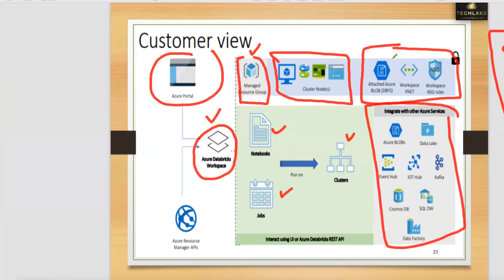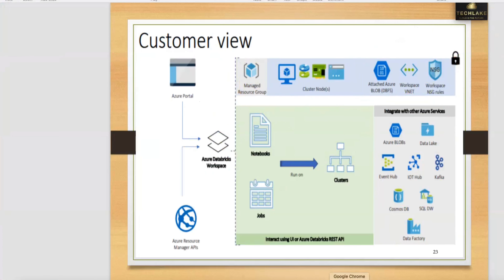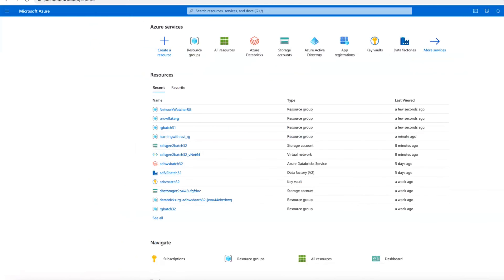Whenever you upload data or create a table it needs some default storage location, which you can access using DBFS. So back-end, one blob storage will be created for this workspace. It will also create one virtual network, one NSG rules, and one managed identity — total four resources will be created for the workspace.